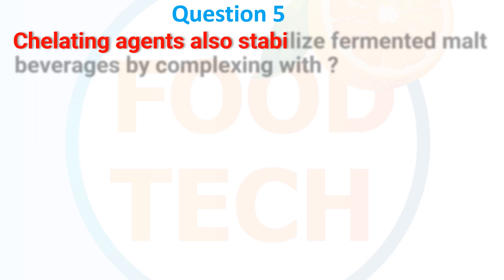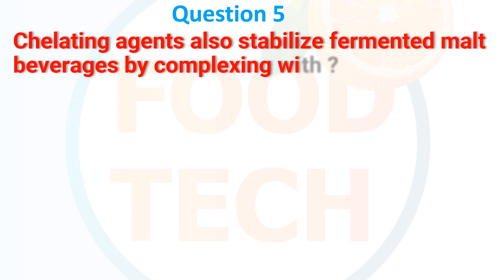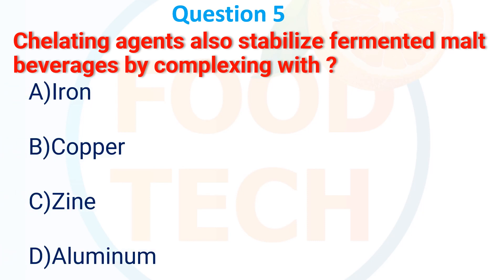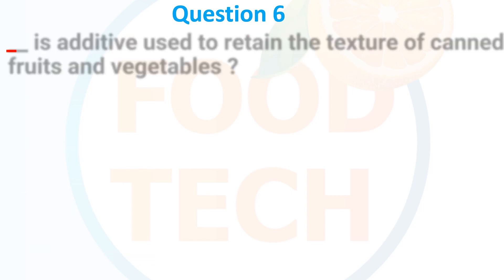A gelating agent also stabilizes the fermented malt beverages by complexing with: A. Iron, B. Copper, C. Zinc, D. Aluminium. The answer is B. Copper.